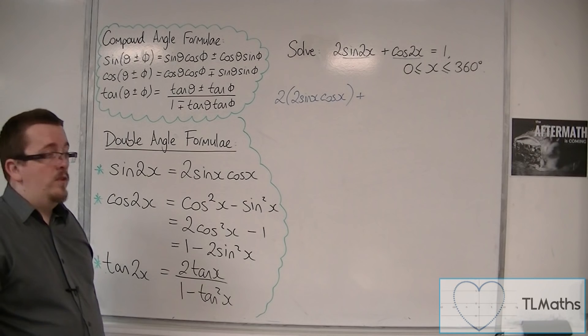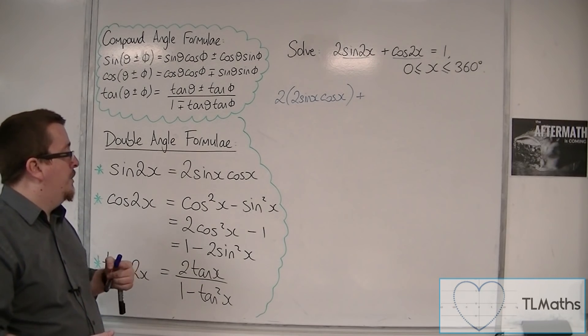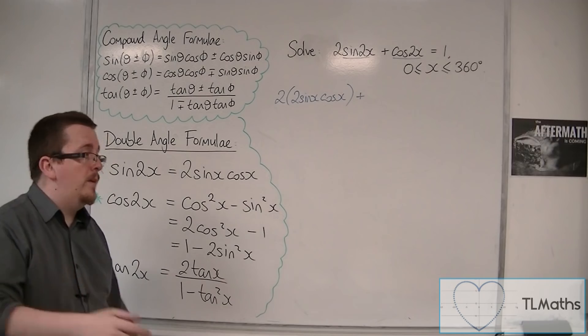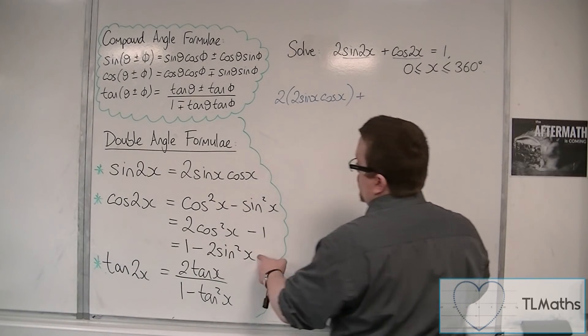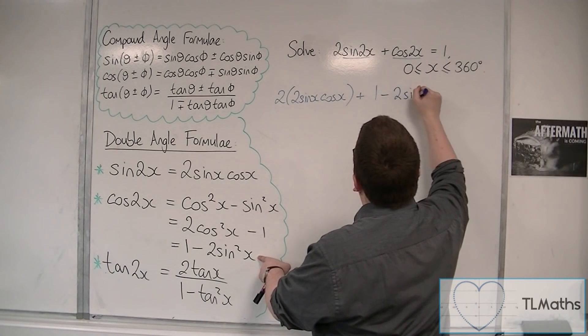And I'm going to choose this 1 - 2sin²(x), not for any particular reason. If you want to try the 2cos²(x) - 1 and see if you get the same answers, that might be a good idea. So, cos(2x), I'm going to replace with 1 - 2sin²(x).